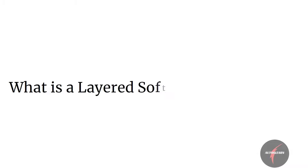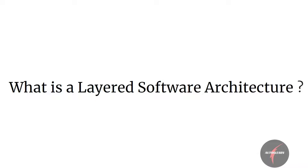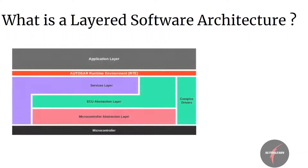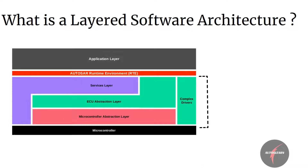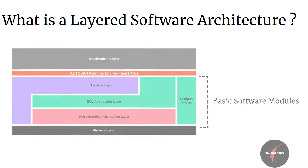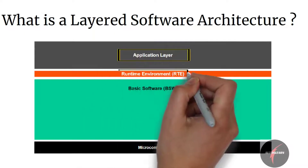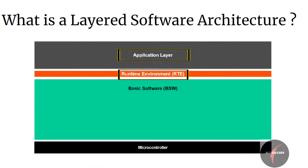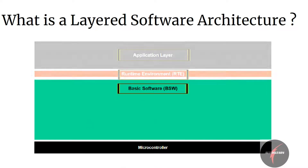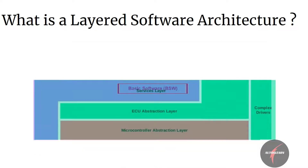With this understanding, let's get into our main topic. Layered software architecture is a hierarchical structuring of AUTOSAR software with the basic software module mapped to different software layers, which helps in understanding the relationship between different modules. At a high abstraction level, AUTOSAR architecture contains three software layers: application, Runtime Environment (RTE), and basic software (BSW). The AUTOSAR basic software is further divided into service layer, ECU abstraction layer, microcontroller abstraction layer, and complex driver layer.